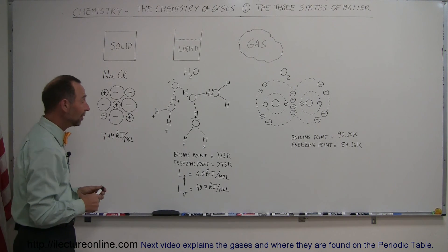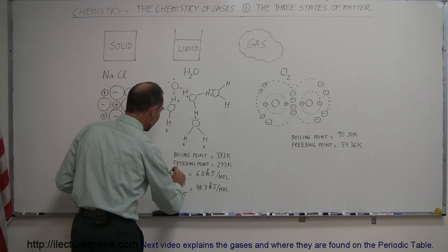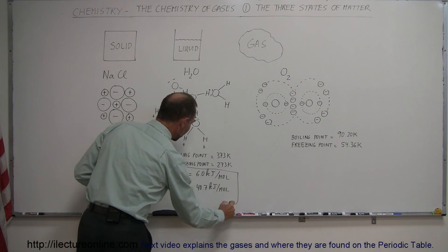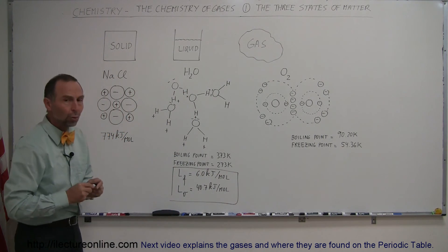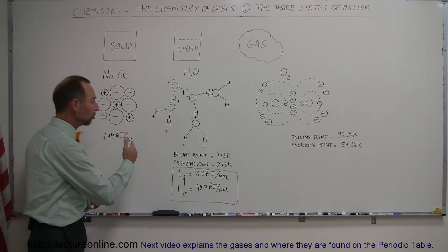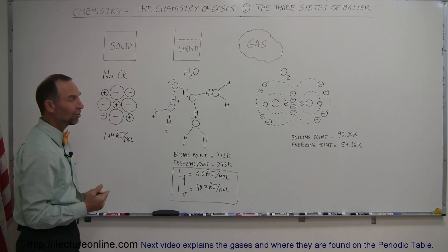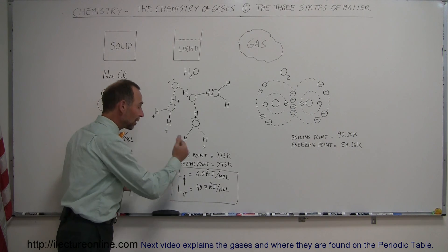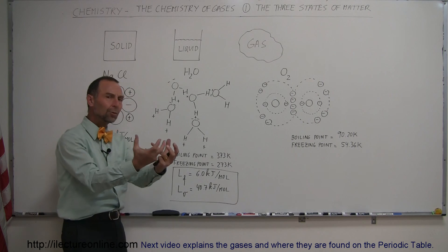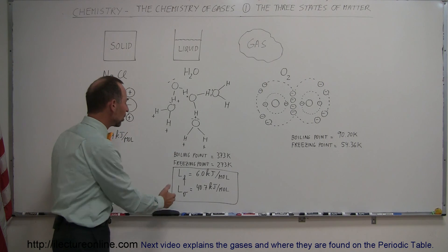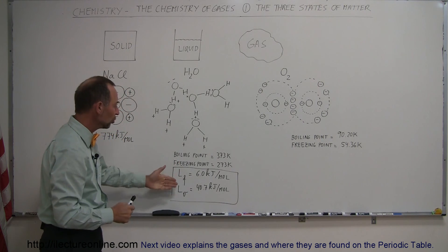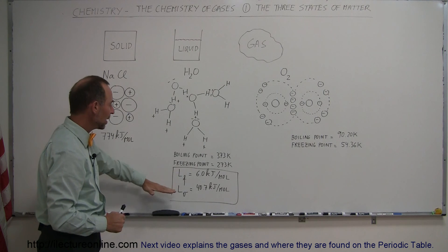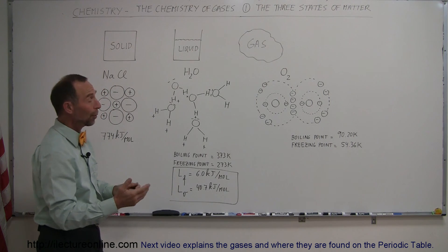One more point is what we call the latent heat of fusion and the latent heat of vaporization. So every substance requires a certain amount of energy to go from the solid state to the liquid state, and from the liquid state to the gas state. In order to cause it to go from one to the other, it requires an infusion of energy. We call that the latent heat of either fusion or vaporization. Fusion to melt and vaporization to vaporize.